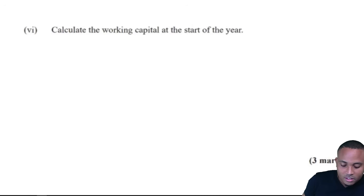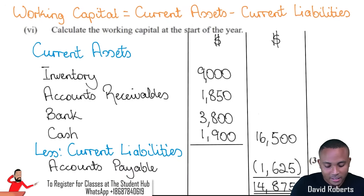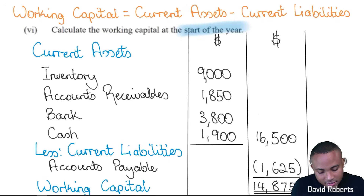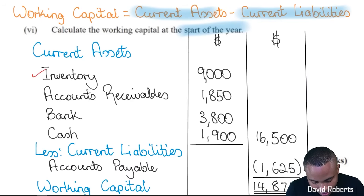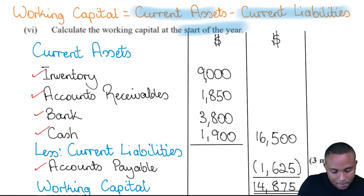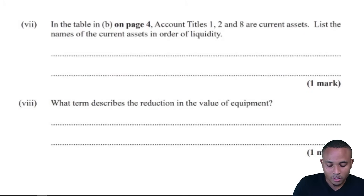Part six: calculate the working capital at the start of the year. Working capital equals current assets minus current liabilities from January 1st, 2019. Our current assets include inventory, accounts receivable, bank, and cash from January 1st, 2019. We then subtract accounts payable from January 1st, 2019 and arrive at working capital of $14,875. This earns three marks.